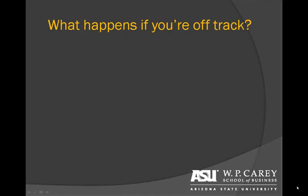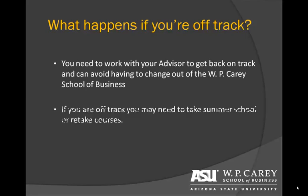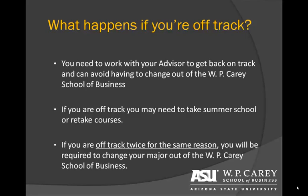If you find yourself in a situation where you are off track, you should work with your advisor to develop a plan to get back on track. We highly encourage you to meet with your advisor once a semester, especially if you have questions about your track status. Together you will develop a plan to get back on track before being required to change your major out of the business school. This may include taking courses in summer, repeating classes, or taking action to fulfill a milestone requirement.